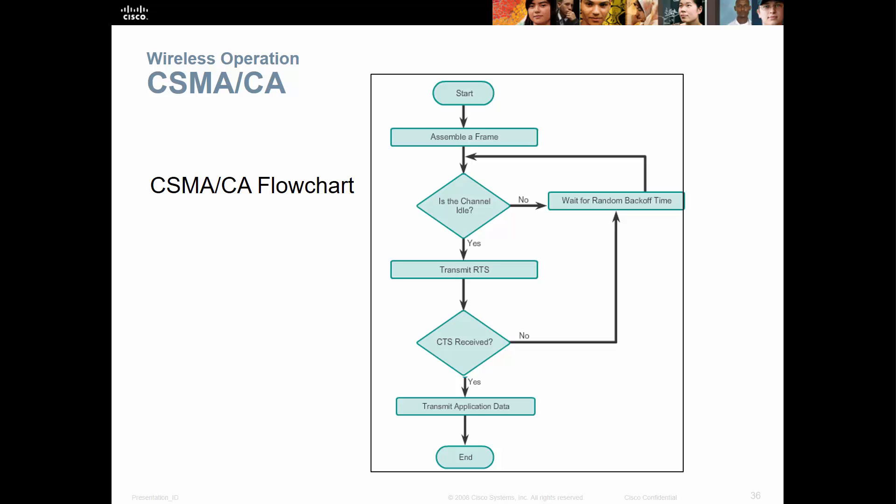Wired networks use CSMA/CD (carrier sense multiple access with collision detection), while wireless uses CSMA/CA (collision avoidance). The flowchart shows: frame ready, check for idle channel, if idle transmit, check if received, and loop through the process if not.